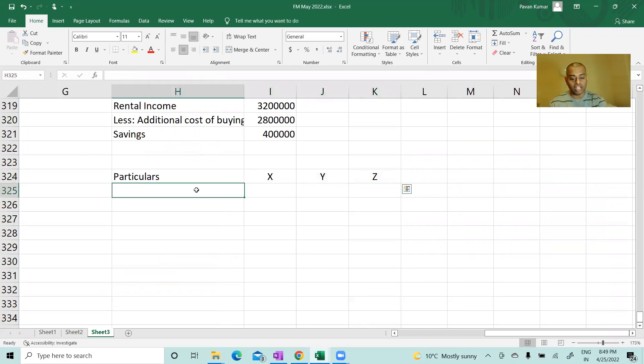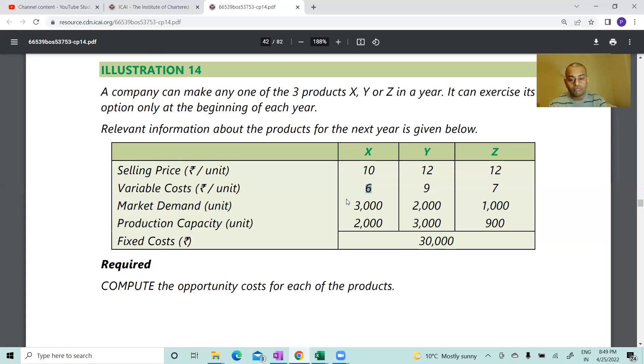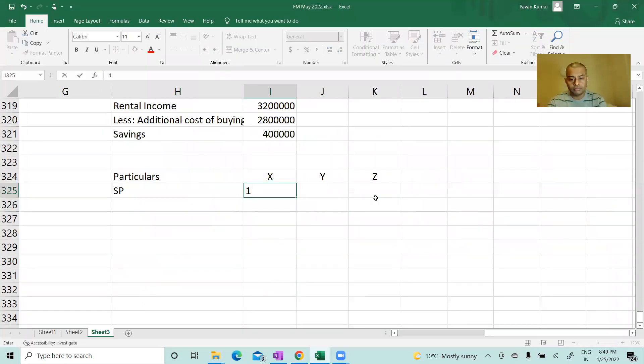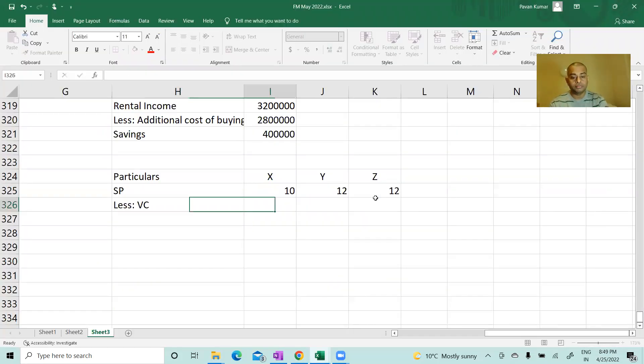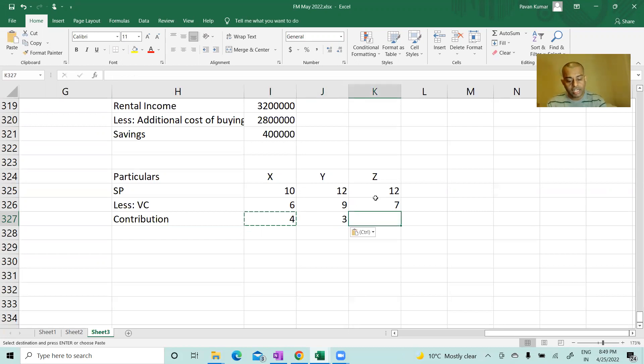Selling price 10, 12, 12. Less variable cost 6, 9, 7. Contribution: 4 rupees, 3 rupees, and 5 rupees.